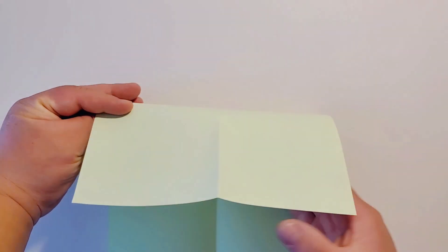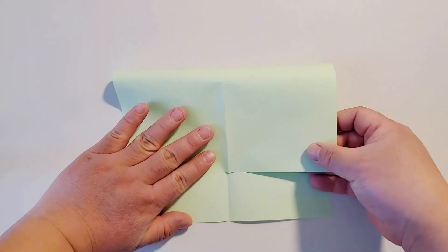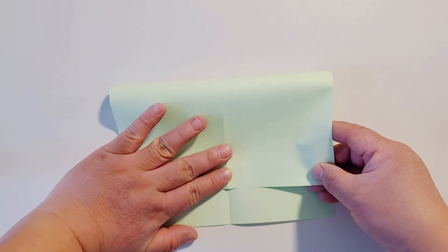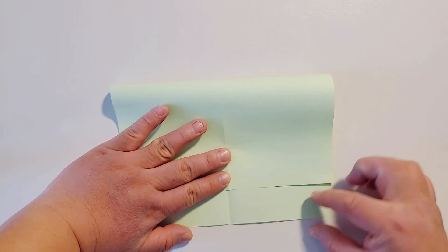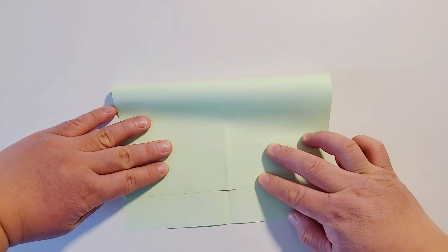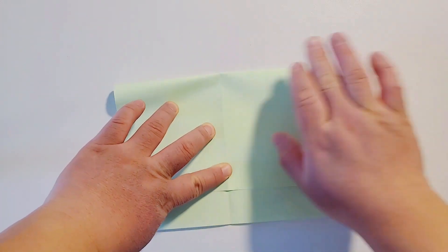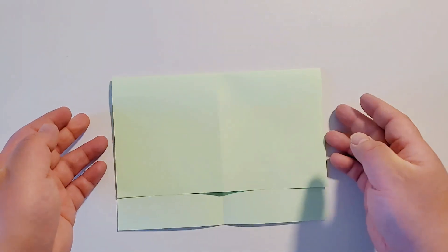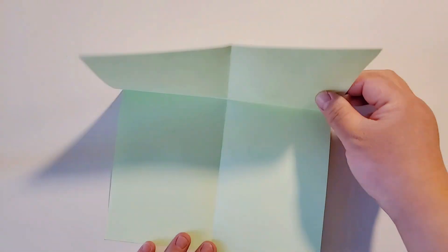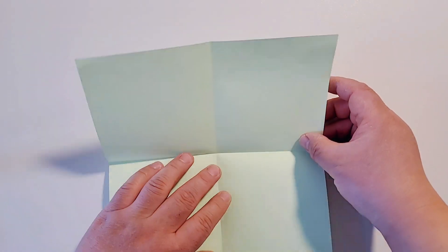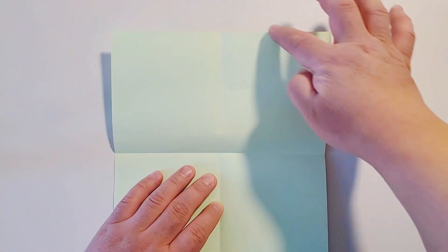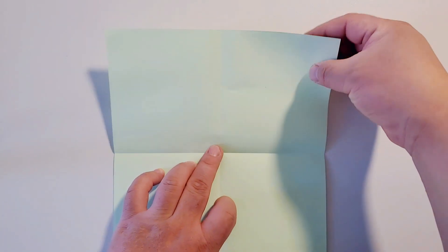Open it up and fold the top edge down, leaving about three centimeters from the bottom. Open it up and then fold the top edge to the crease we just made.